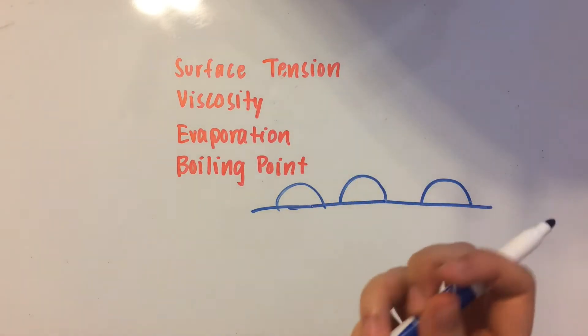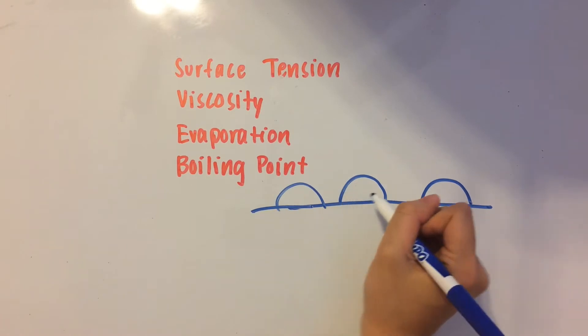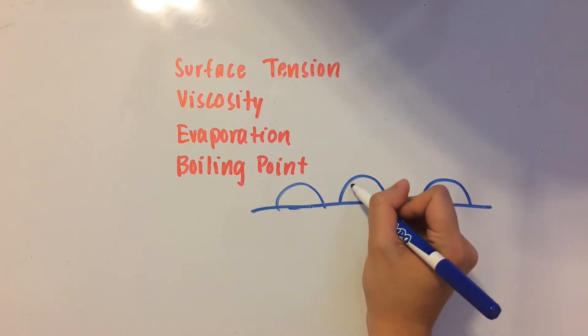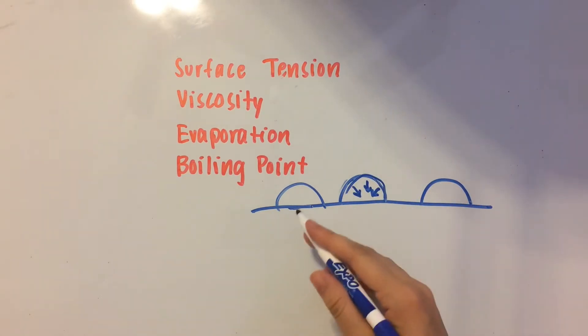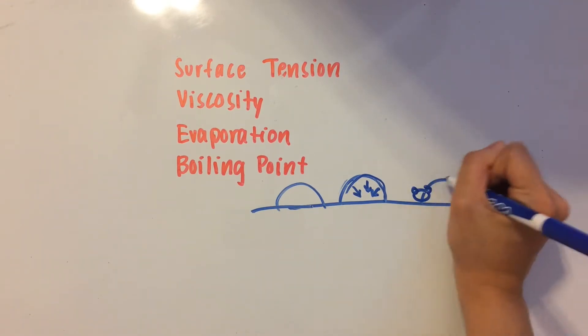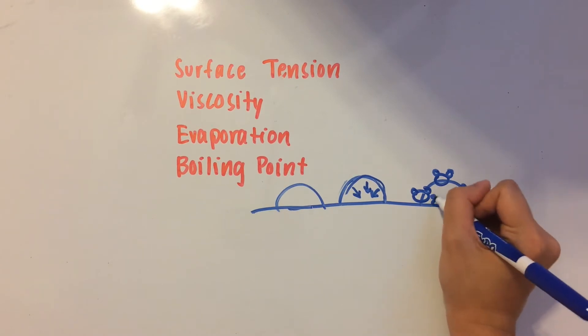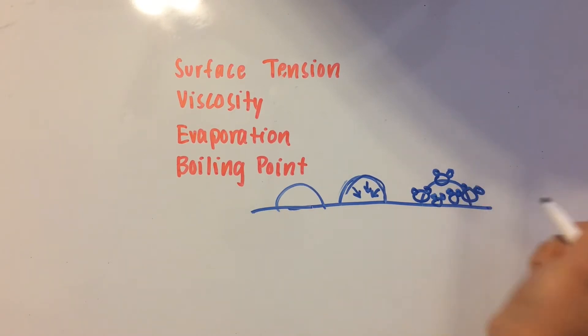because surface tension is caused by the attractions of the outside molecules of a liquid to the inside ones. I chose water beads because they're a really good example of this. Let me draw in the water molecules first. These are the outermost ones, and there's a couple of inner ones.